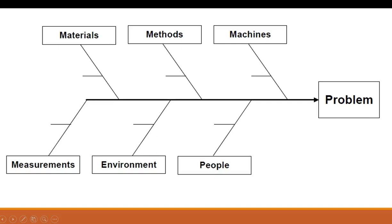Hi, this is Professor Cummings. What you have in front of you is what's known as an Ishikawa diagram. You also hear it called a cause and effect diagram, a fishbone diagram, and probably a few other names. Basically it's a diagram used as a problem-solving tool. What I'm going to do today is give you a brief presentation over how to use an Ishikawa diagram and also why to use one.